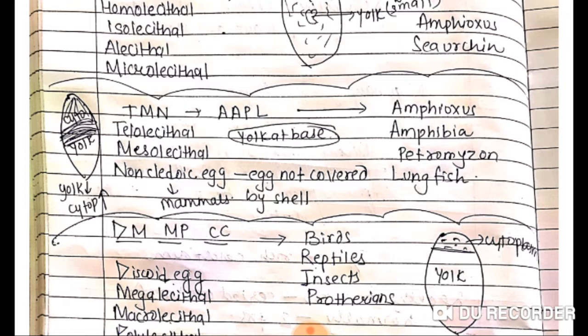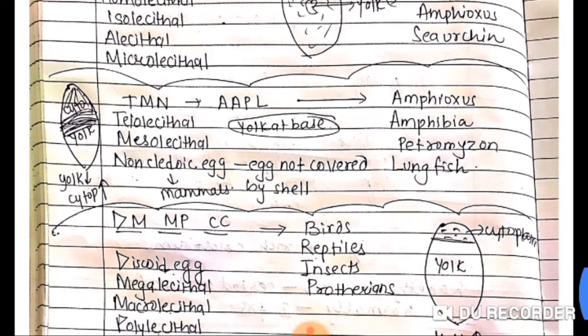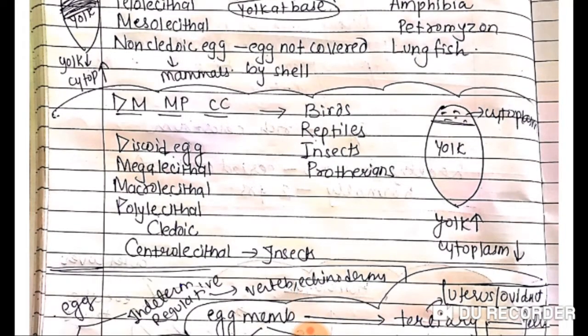In the non-cleidoic egg category, mammals also come. Now remember the mnemonic 'dm do mpa cc': discoid, megalecithal, macrolecithal, polylecithal, cleidoic, centrolecithal. This is found in birds, reptiles, insects and prototheria. This is very important to remember.